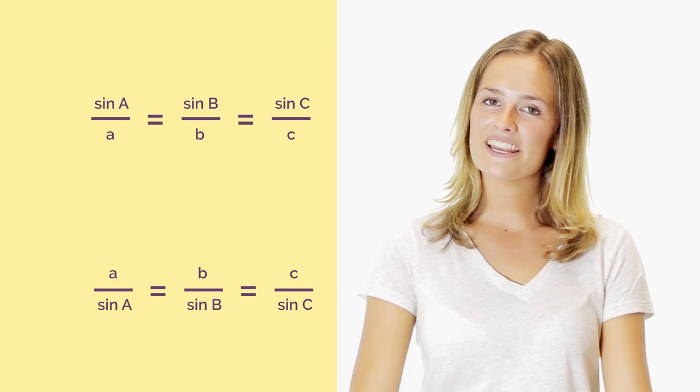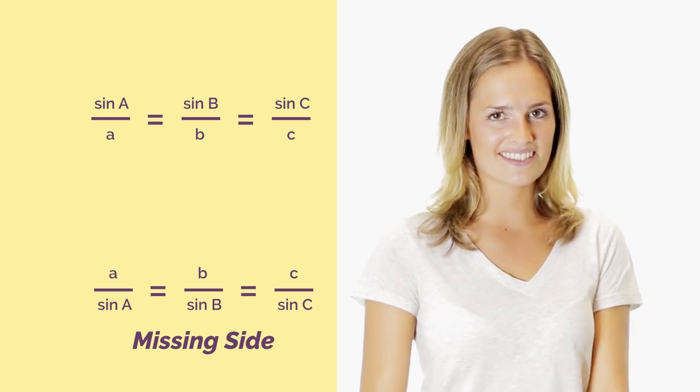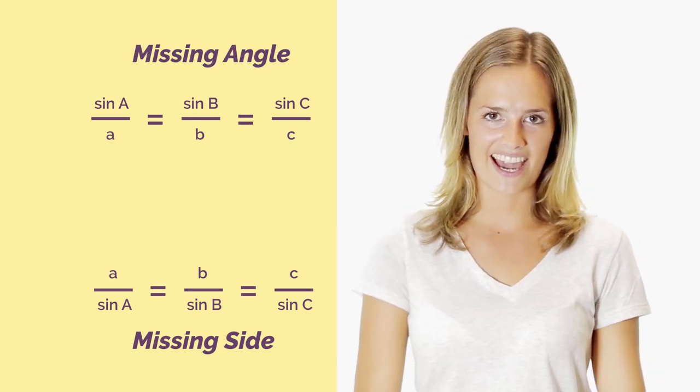The formula is written in two different ways because this way is best for finding missing sides and this way is best for finding missing angles. So let's jump straight in and look at an example.